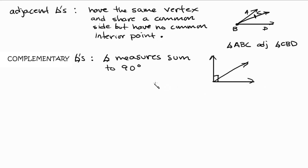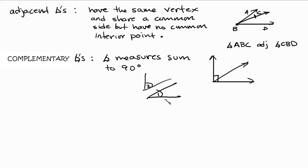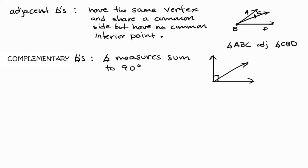A common question is: do complementary angles have to be connected together? The answer is no. You can have one angle be one size and another angle be a different size — call them angle one and angle two — and if you connect them they make 90 degrees. For example, one could be 45 degrees and the other 45 degrees. They don't have to be attached.